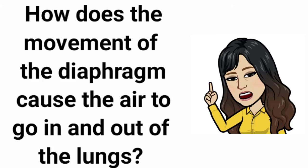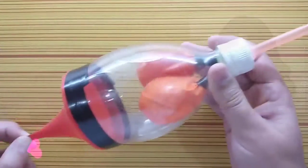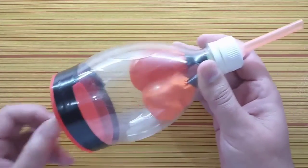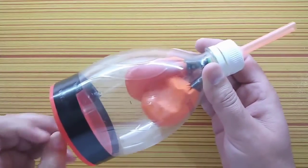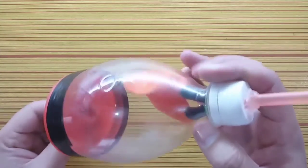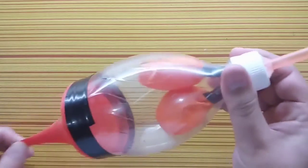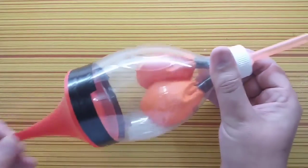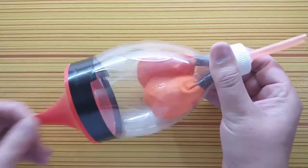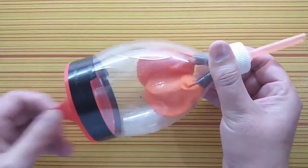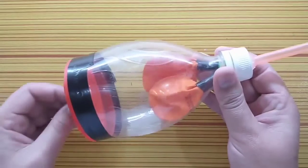For the next question: how does the movement of the diaphragm cause the air to go in and out of the lungs? When you are breathing, the diaphragm moves downward. It lowers the pressure inside your lungs, leaving extra space or a vacuum, so the air has no option but to rush through your mouth into your lungs.